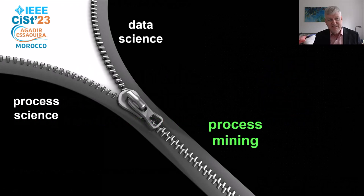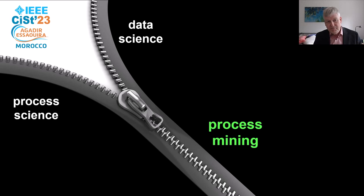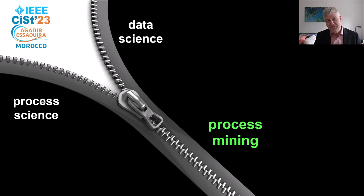Process mining is a super exciting technology because it combines process science and data science. In the past, people would often focus on process modeling and process analysis — all model-based without actually using the data. On the other hand, there are many people working on machine learning, data science, and various forms of AI that typically are not interested in process models at all, focusing instead on data sources like text and images. Process mining is this unique combination of both data science and process science.